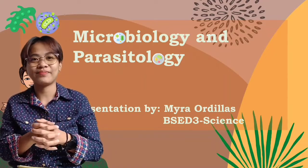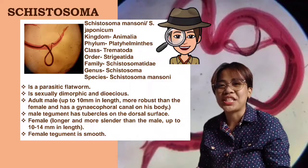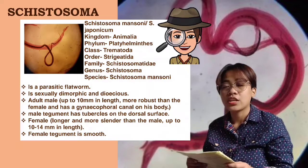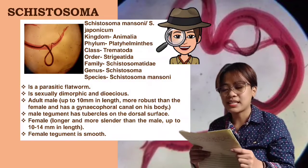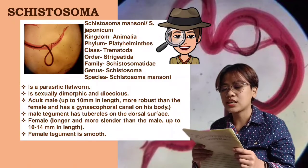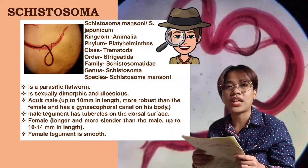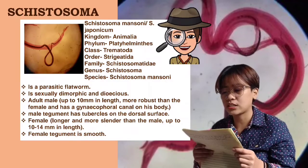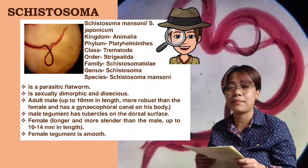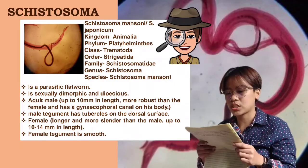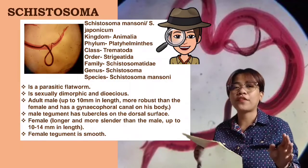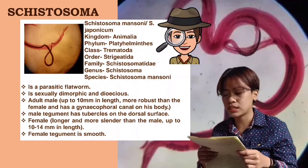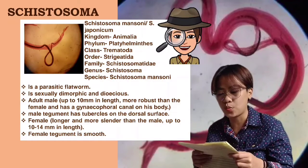Let's start! First species: Schistosoma. Schistosomiasis is a chronic and potentially lethal tropical disease mainly caused by parasitic gut flukes. There are 5 species of Schistosomes that infect humans.